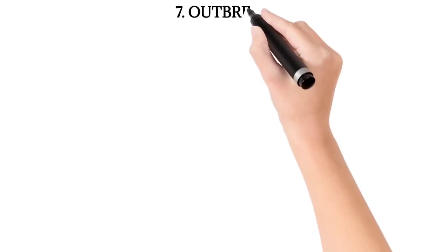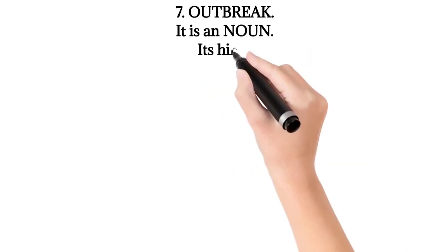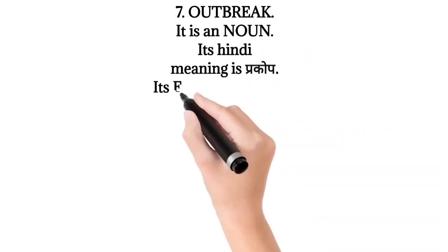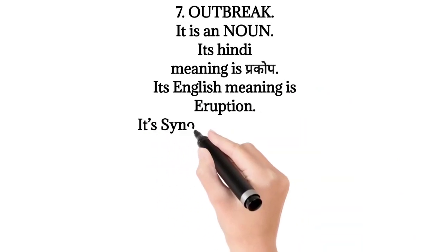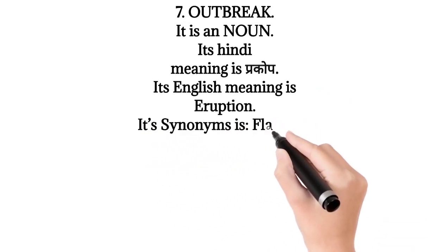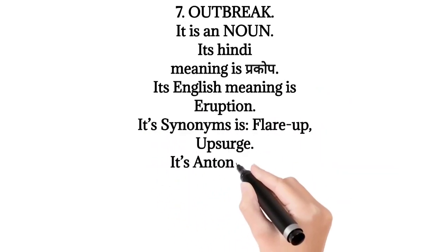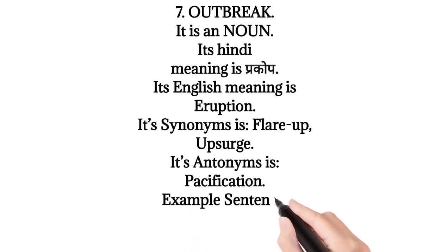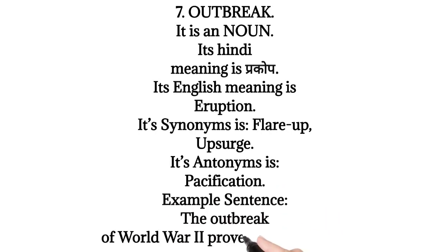7. Outbreak — it is a noun. Its Hindi meaning is 'prakop'. Its English meaning is 'eruption'. Its synonyms are flare-up, upsurge. Its antonym is pacification. Example sentence: The outbreak of World War II proved to be massive.